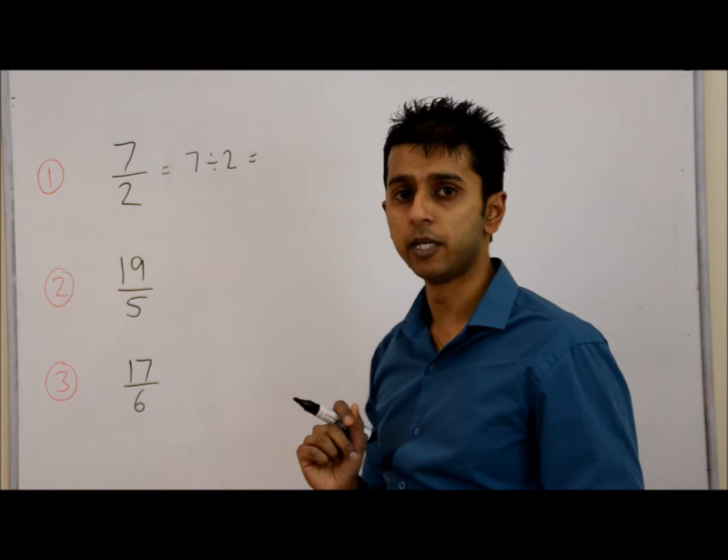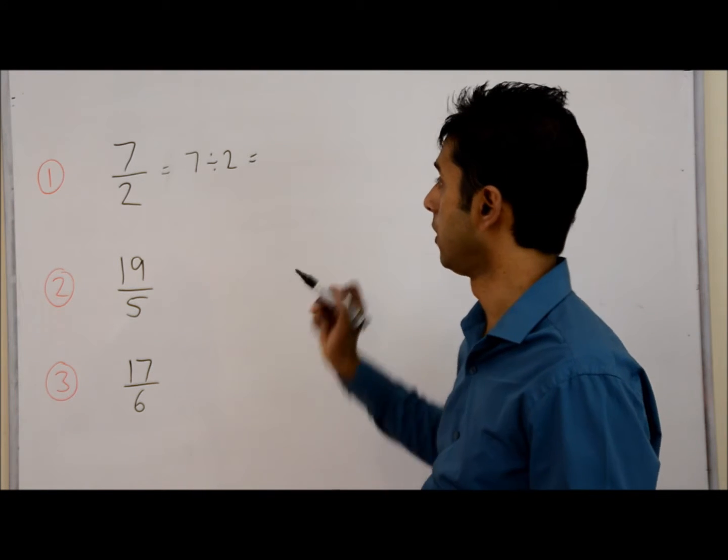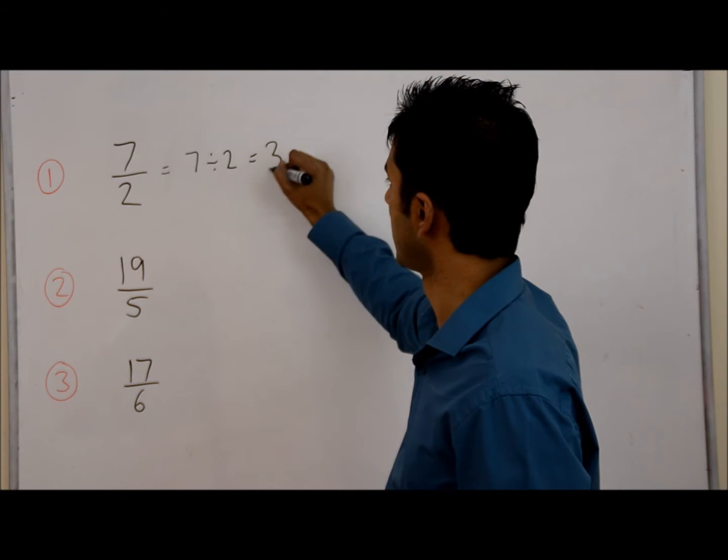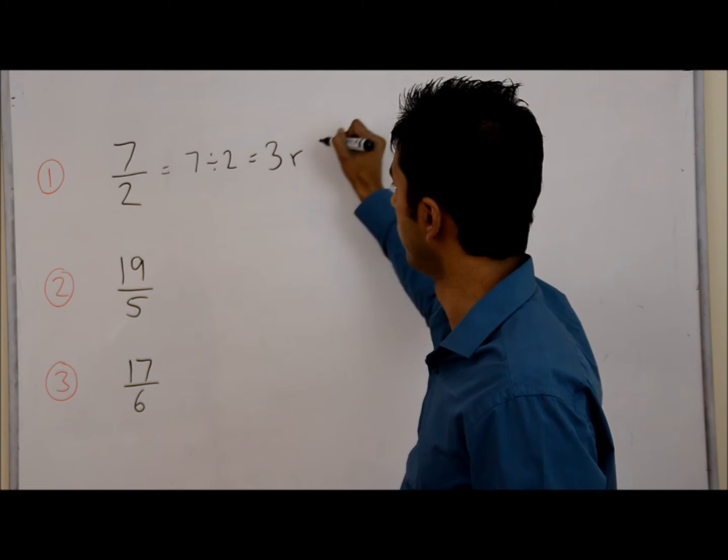The first thing you need to work out is how many times does 2 go into 7? 2 goes into 7 3 times completely, with a remainder of 1.